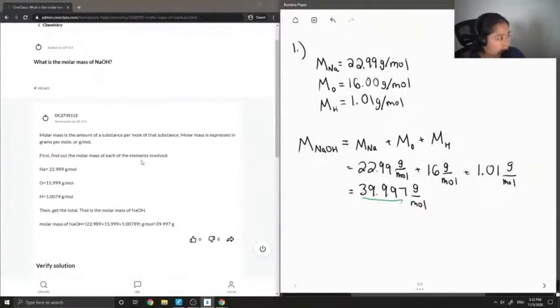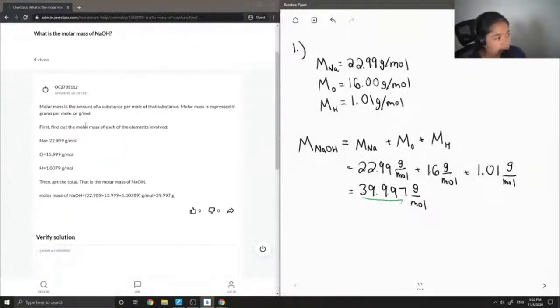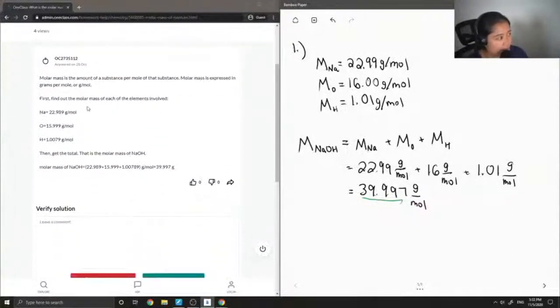So let's see the answer from our junior tutor. Molar mass is the amount of substance per mole of that substance, and molar mass is expressed in grams per mole. First find out the molar mass of each of the elements involved for sodium, oxygen, and hydrogen. Then get the total, that is the molar mass of sodium hydroxide. Good.